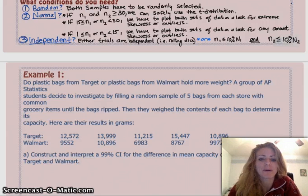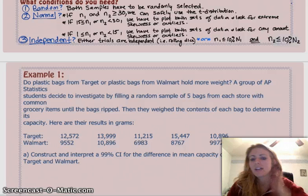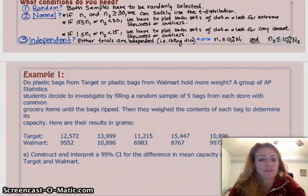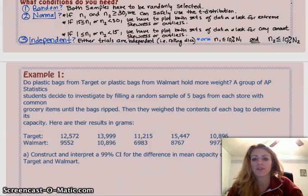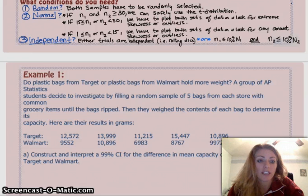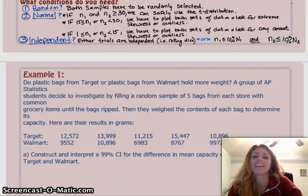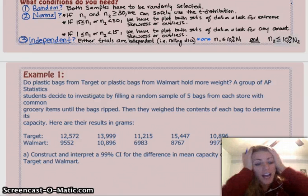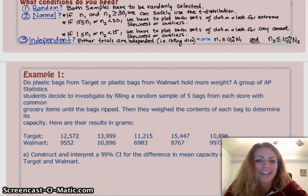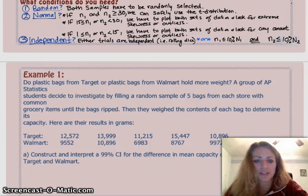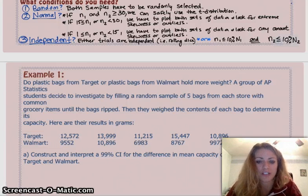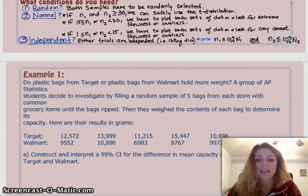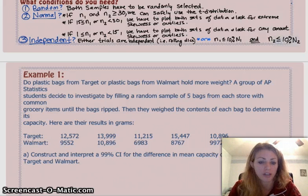All right. So, let's do an example. We want to know, do plastic bags from Target or plastic bags from Walmart hold more weight? A group of AP Stat students decide to investigate by filling a random sample of five bags from each store with common grocery items. They clearly do not know that that makes so much more work for them later if the sample size is so small. Anyways, five bags from each store. They did not have a good stats teacher. With common grocery items until the bags ripped. They then weighed the contents of each bag to determine its capacity. Here are the results in grams. We've got Target and Walmart. And then it says, let's construct and interpret a 99% confidence interval for the difference in mean capacity of plastic bags from Target and Walmart.